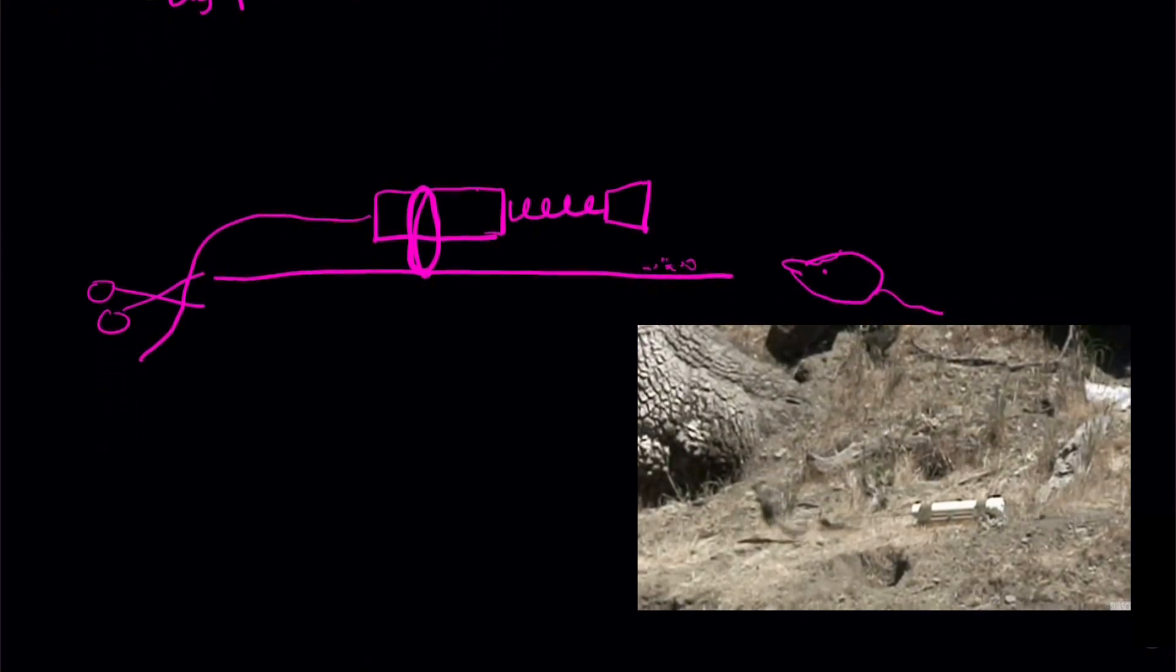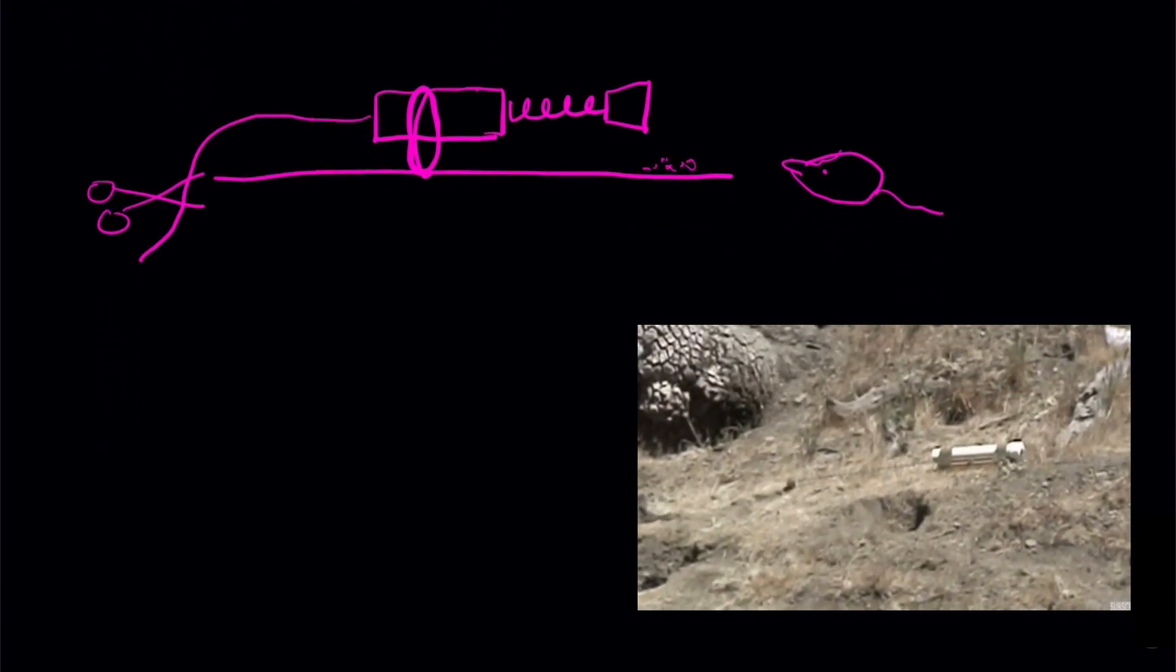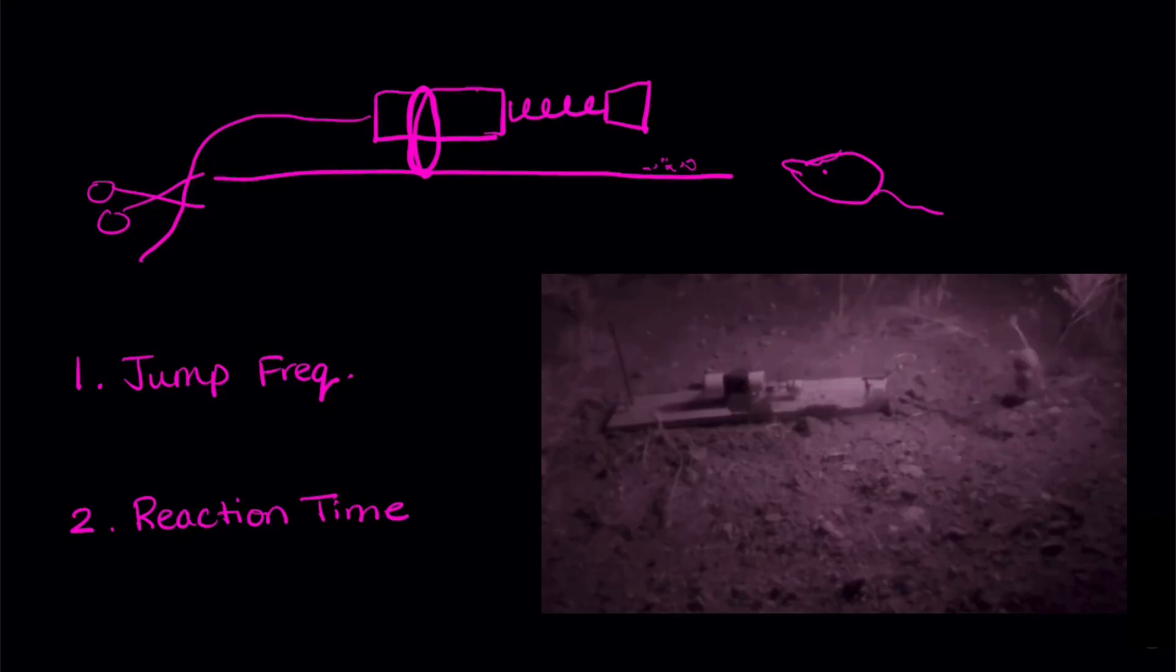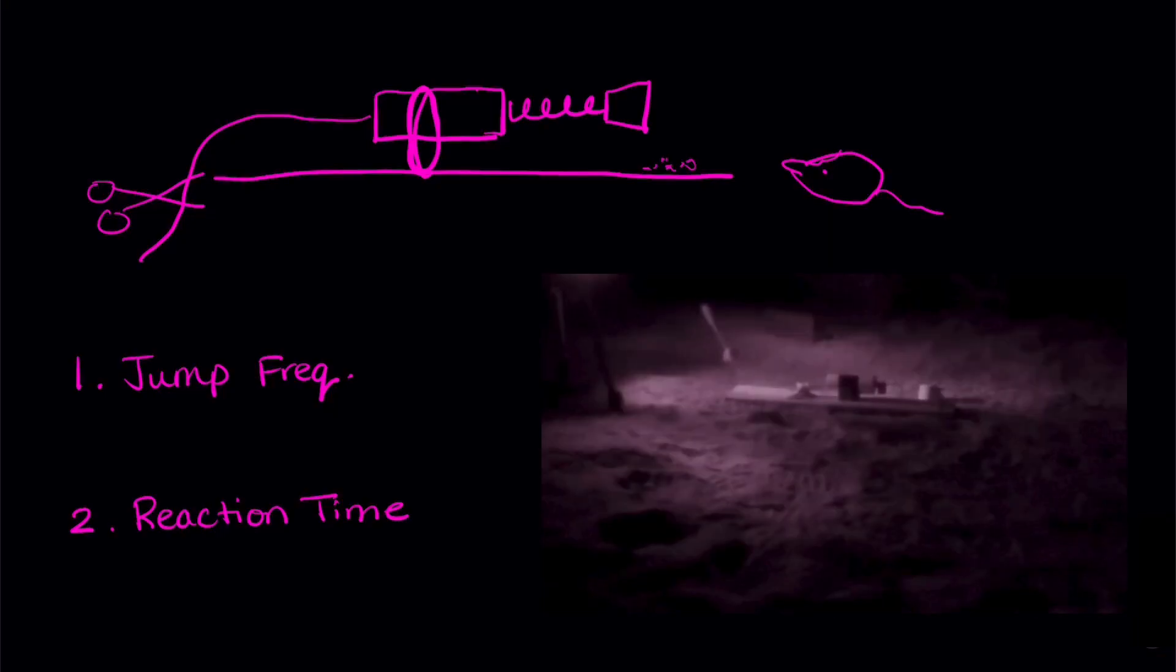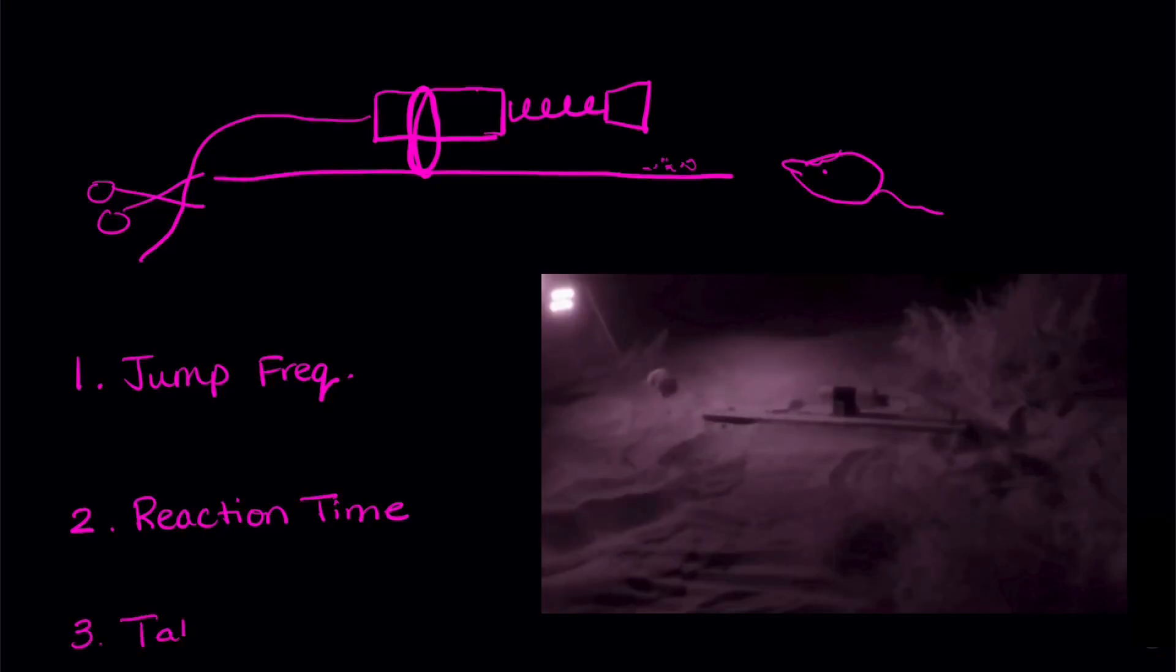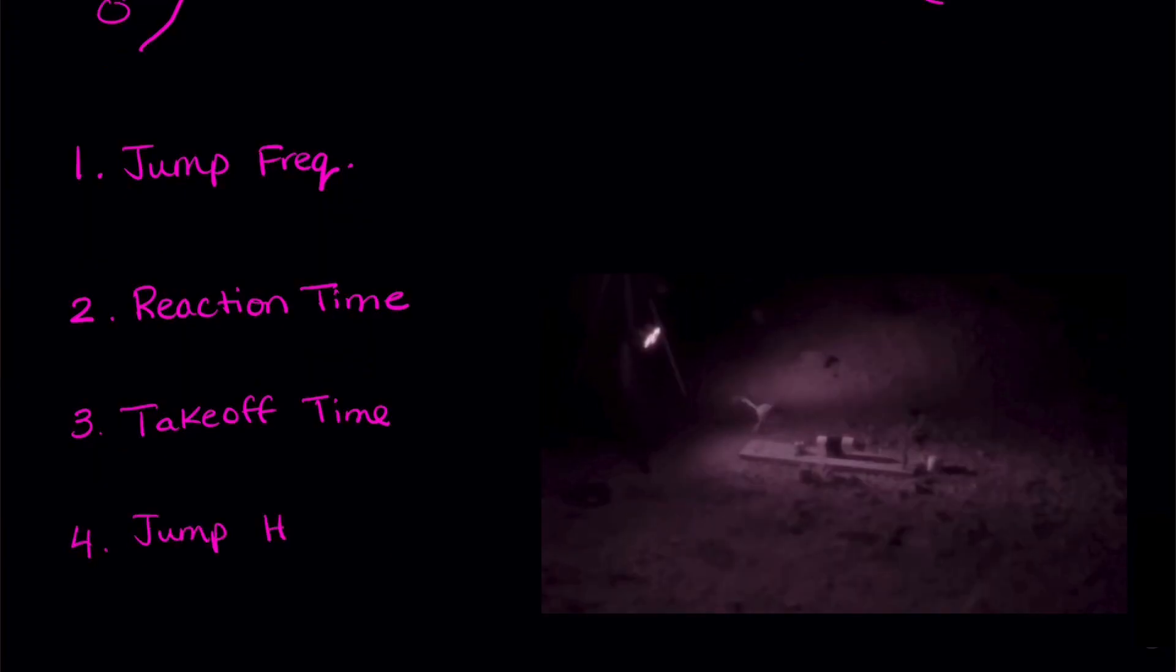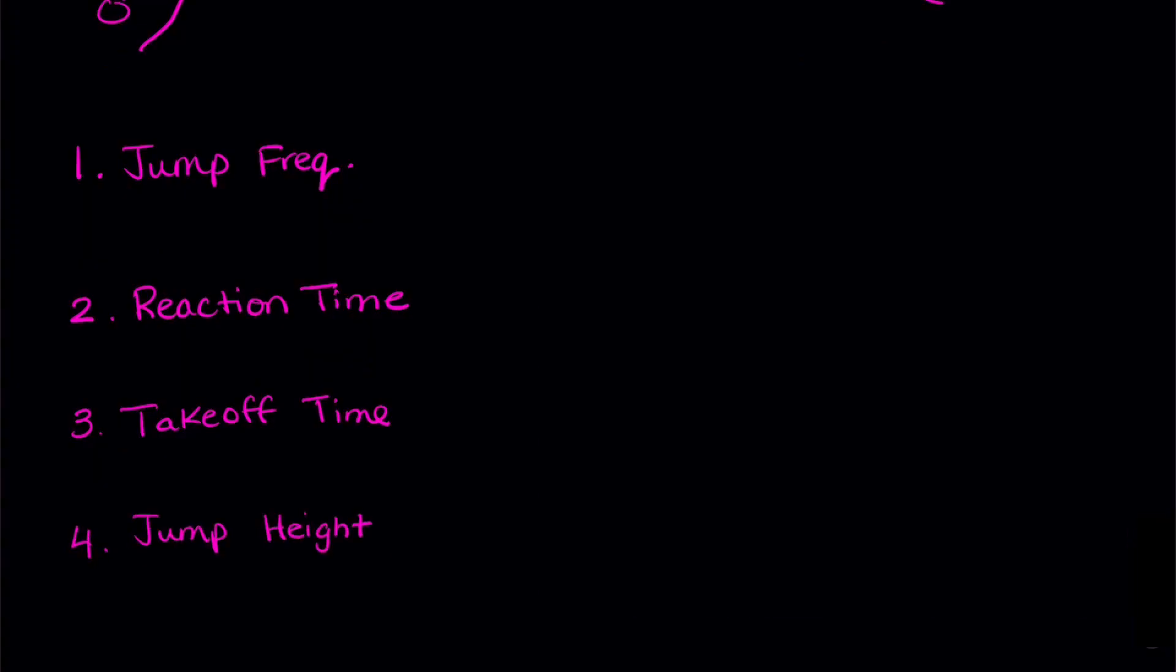They filmed the rodents' reactions and looked at four different things. One, jump frequency, so how many of the rodents actually jumped away. Two, their reaction time, so how quickly they reacted to this fake predator. Three, their takeoff time, so how long it actually took them to leave the ground. And four, jump height, which is just how high they jumped.